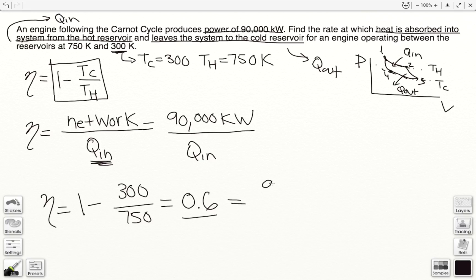This is also equal to 90,000 kilowatts over our Q_in. So then our Q_in will be equal to 150,000 kilowatts.